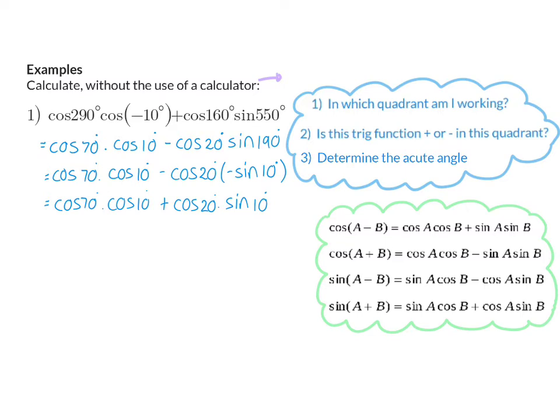So I can see here that both my terms have an angle 10, a cos of 10, and a sin of 10, but now I have a cos of 70 and a cos of 20. These two also need to have the same angle size.